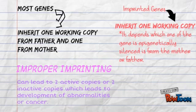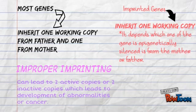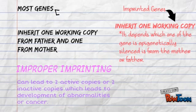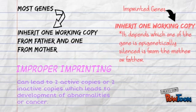However, improper imprinting can lead to two active copies or two inactive copies, which leads to the development of abnormalities or cancer. Uniparental disomy is when a person receives two copies of one chromosome, or part of a chromosome, from one parent and no copies from the other. Barr body is when a female shuts off one of their X chromosomes during embryonic development, resulting in two inactive X chromosomes, and is sometimes referred to as sex chromatin. If females expressed both X chromosomes at once, double the necessary genetic product would be produced.